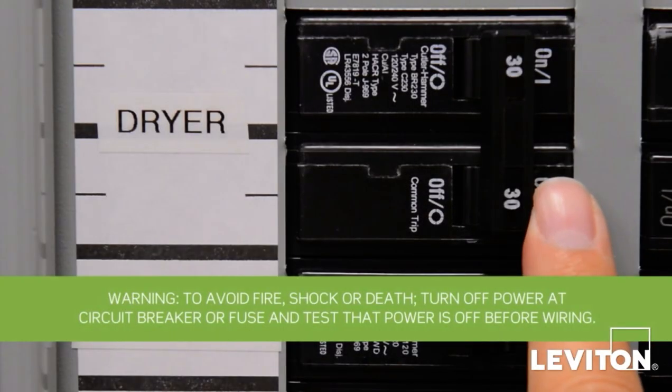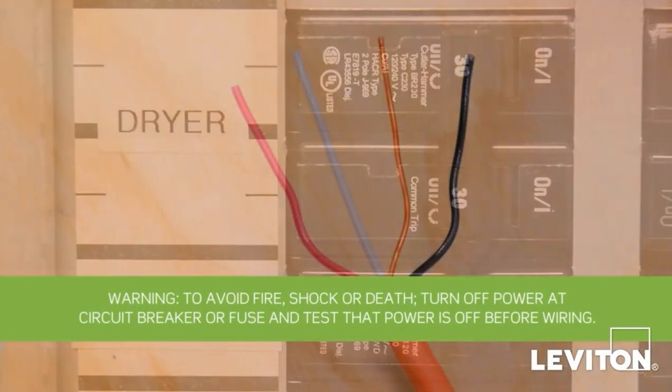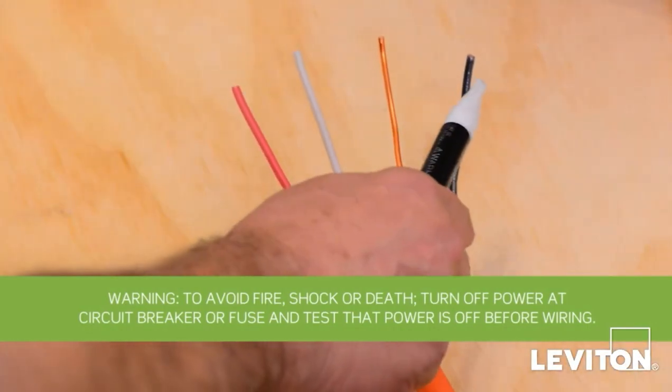Be sure to turn the power off at the circuit breaker and use a voltage tester to ensure that the power is completely off. If you need to remove any existing device, do so now and then cap off the exposed wires and separate them.